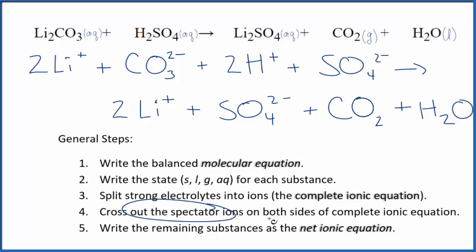Now we cross out the spectator ions. They're on both sides. In the reactants up here on top, I see I have two lithium ions. In the products, two lithium ions. So these are spectator ions. We can cross those out.